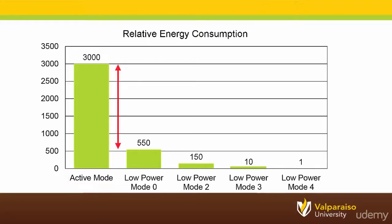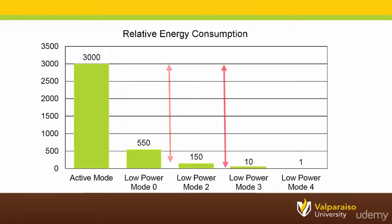You can see the significant reduction in energy consumption as the microcontroller moves from active mode to low power mode zero, then two, then three, and eventually to its deepest sleep, low power mode four.